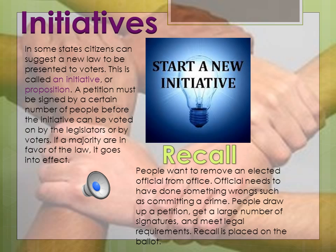Recall is another power of the people — someone can be removed from office if a large enough number of signatures are collected on a petition and all certain legal requirements are met. The recall issue is then placed on a ballot, and if a majority of voters are in favor of the recall, the elected person must leave office. This rarely happens, but usually it's because the elected official is accused of a crime like stealing public funds for personal use.